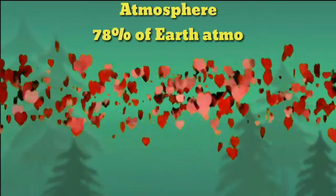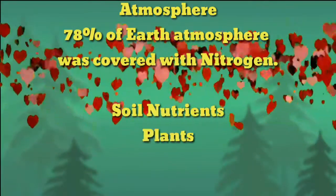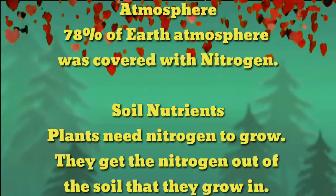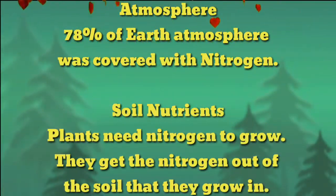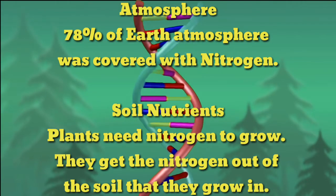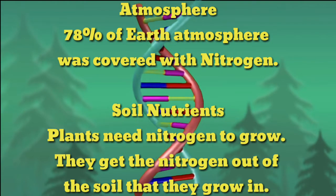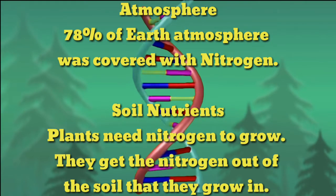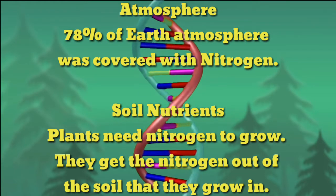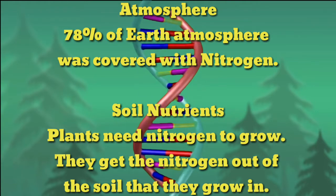Atmosphere. 78% of Earth's atmosphere is covered with nitrogen. Soil nutrients. Plants need nitrogen to grow, and they get the nitrogen out of the soil that they grow in.